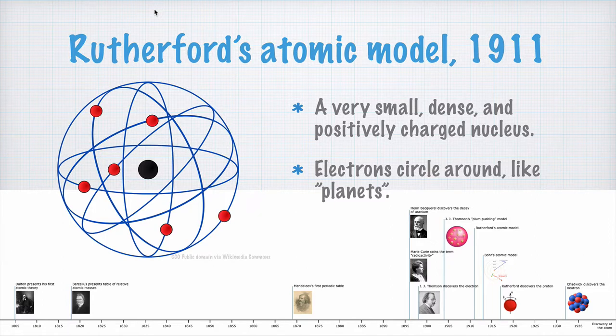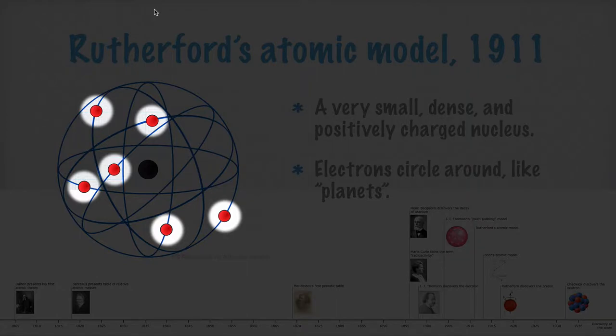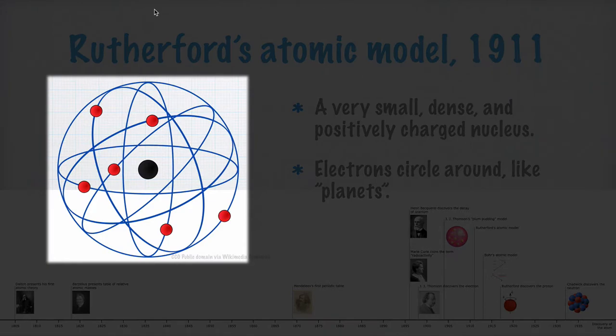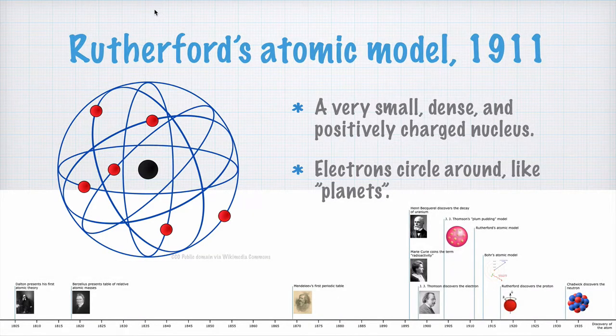There was only one problem with Rutherford's atomic model. It was completely unlikely, if not impossible. Classical physics tells us that the electrons in a fraction of a second should fall back into the nucleus and not circle around it at all. But why didn't they?